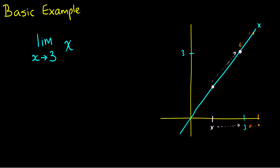For instance, if x approaches 3 from the left, maybe x = 2 gives us 2. Moving even closer: x = 2.5 gives 2.5 back. Even closer, x = 2.99 gives 2.99 back. We can do this from the left and the right, and we'll see that the closer we get to 3, our limit will be 3.